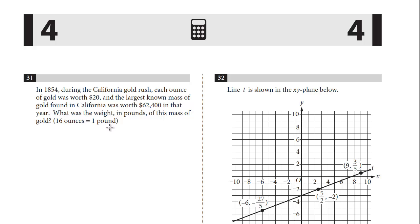We've seen this question before. This is a unit conversion, and the question's asking for the weight in pounds of this large mass of gold. It's $20 an ounce, so the first step is let's figure out how many ounces.